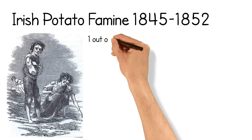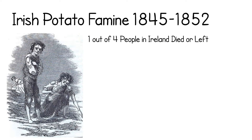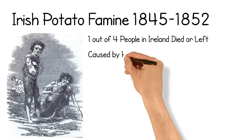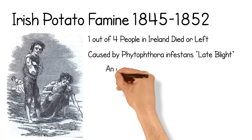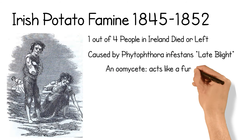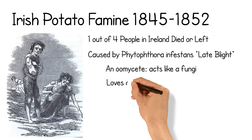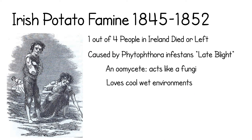Irish Potato Famine, 1845–1852. This was a period of mass starvation in Ireland. About one fourth of the population either died or left the island. What caused the disease? An oomycete — a fungus-like organism — that took advantage of three wet years in Ireland and caused an epidemic that ravaged the potato crop and caused the starvation.